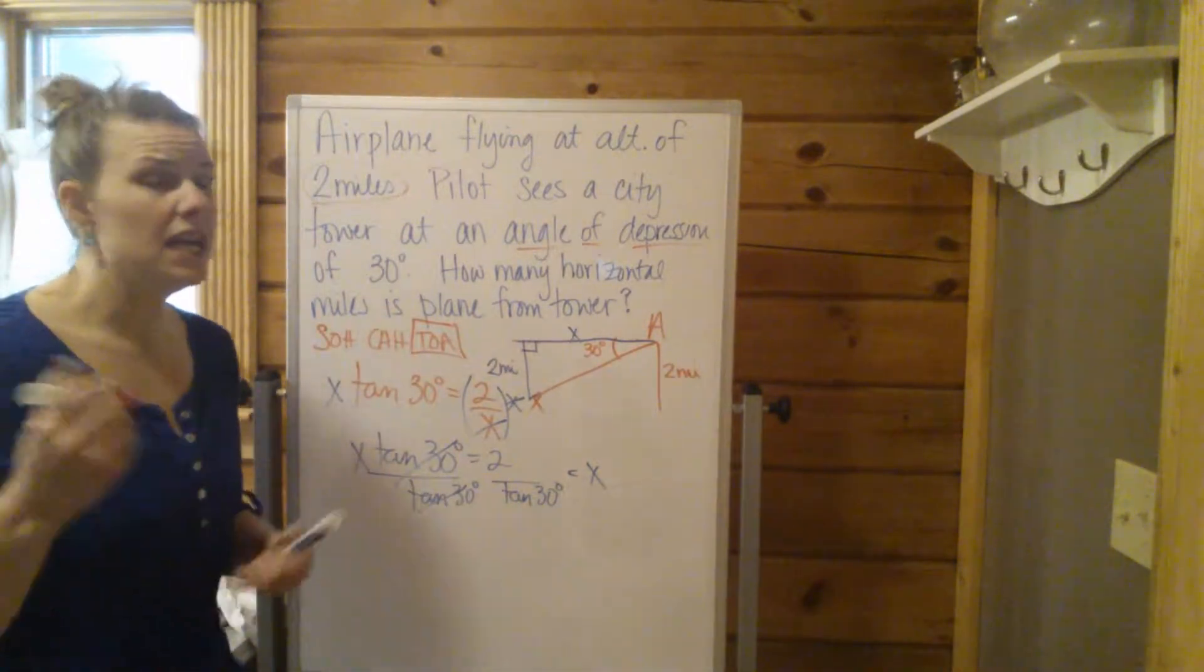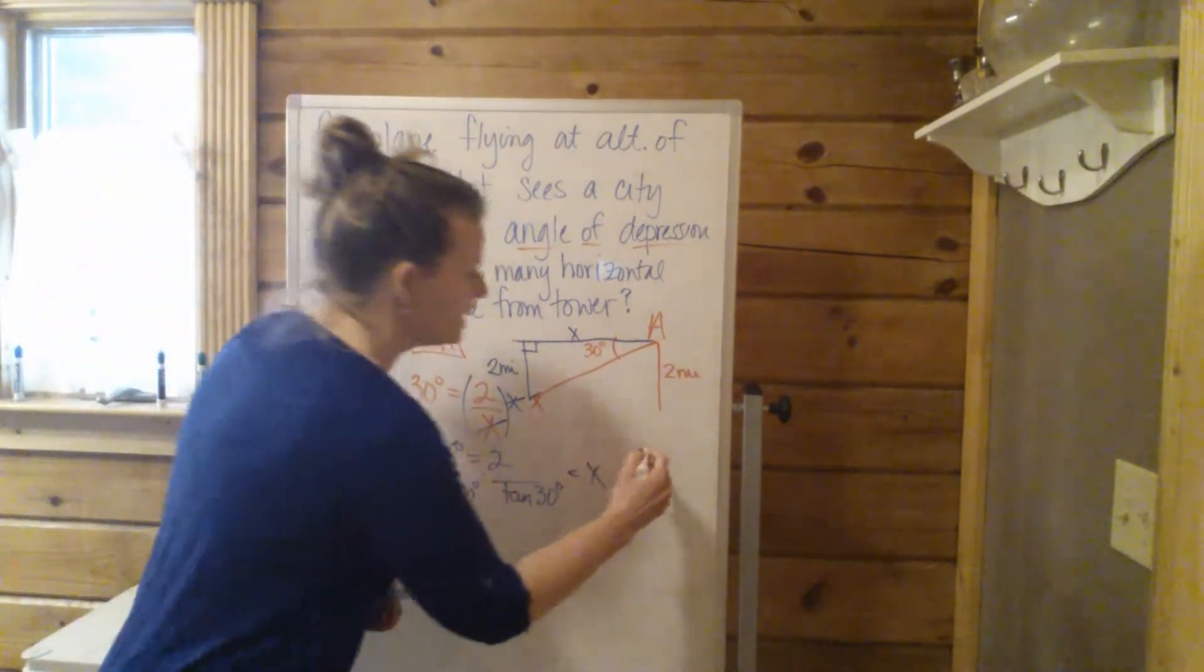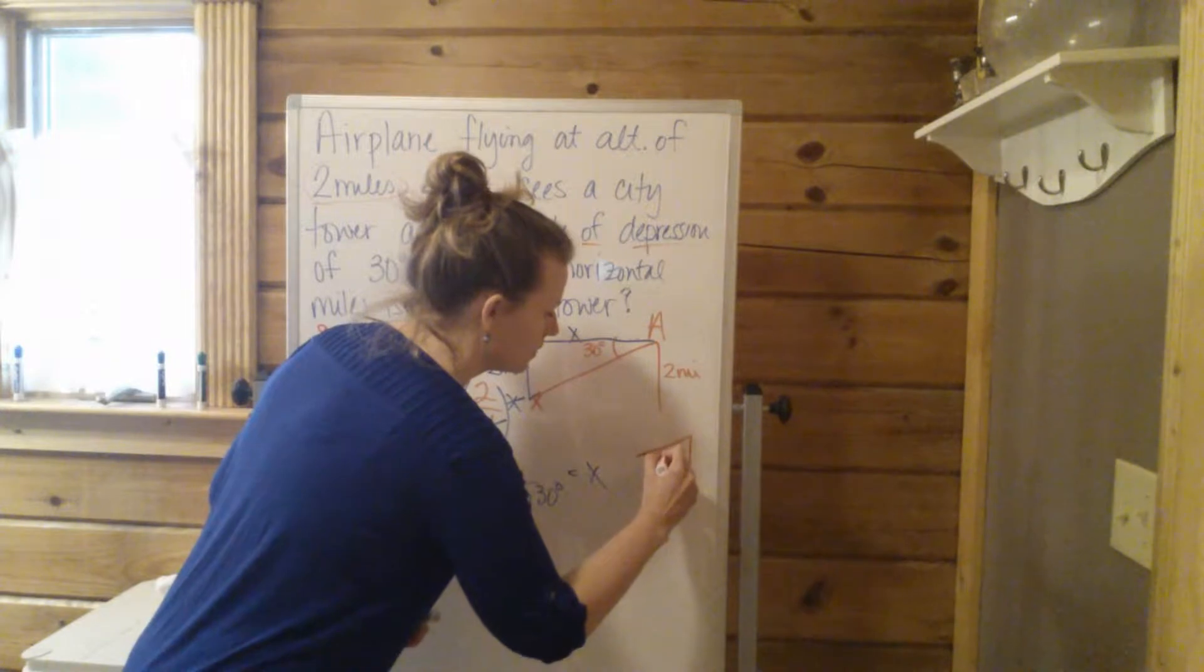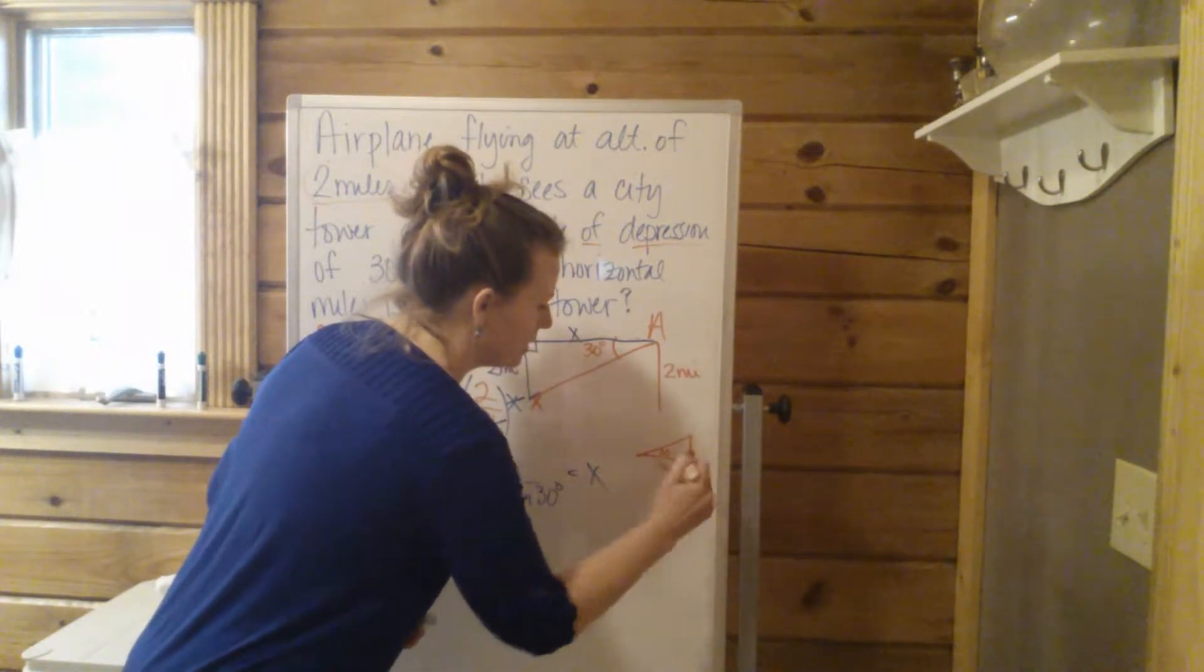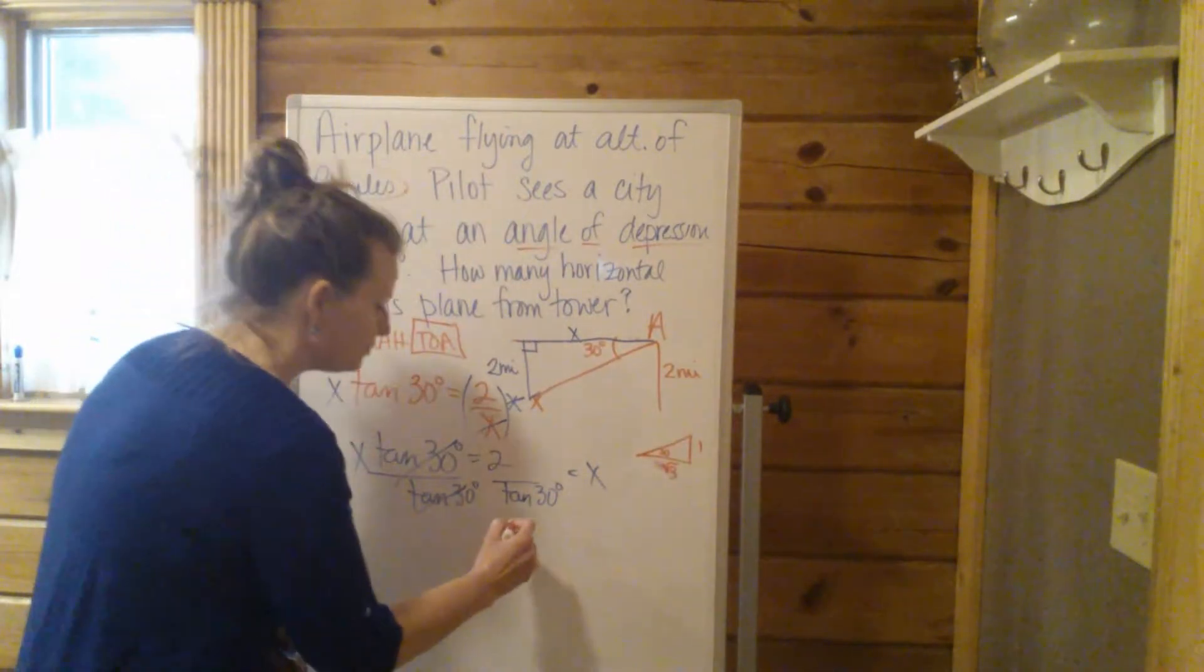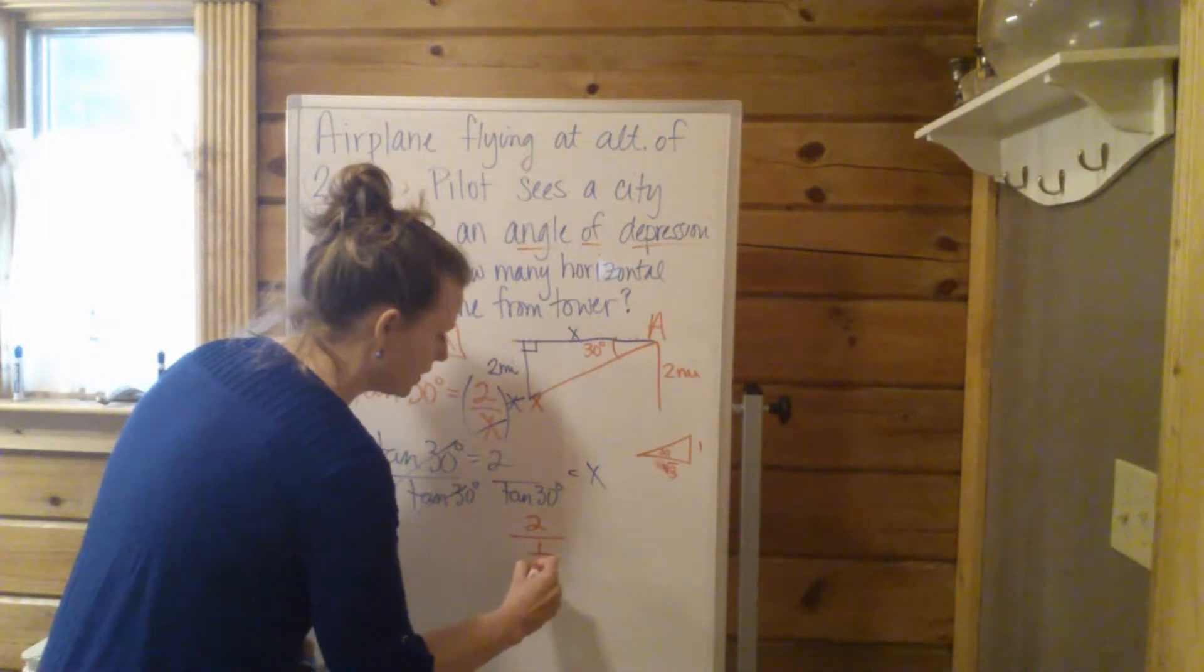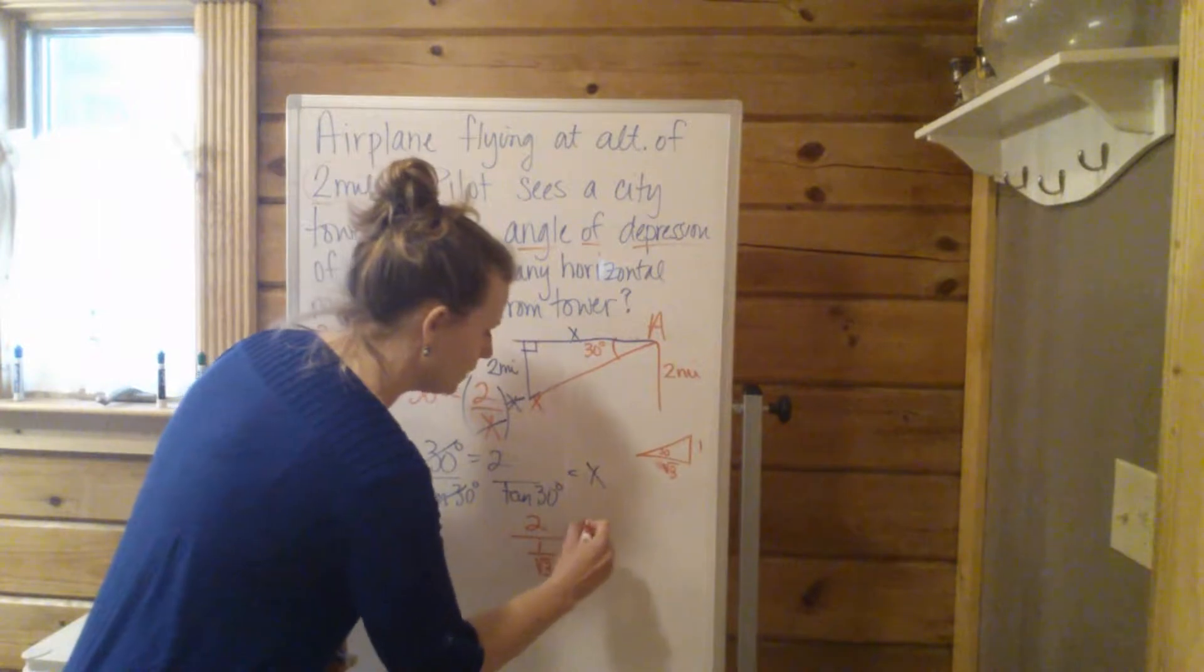Now the tangent of 30, if you don't have a calculator handy, that's one of your special right triangles. Tangent of 30 is, opposite over adjacent is 1 over the square root of 3. So we're going to have 2 over 1 over the square root of 3 equals X.